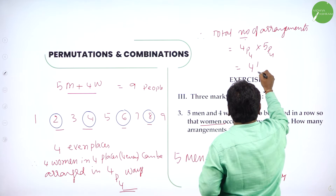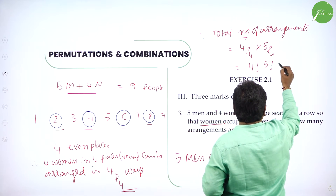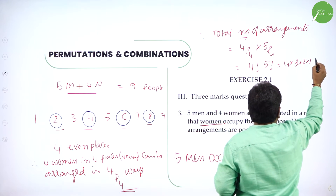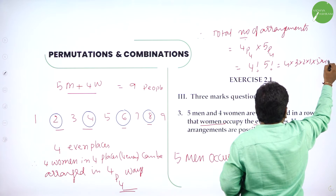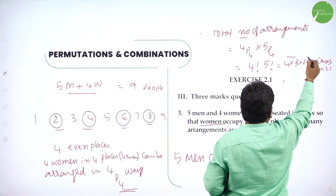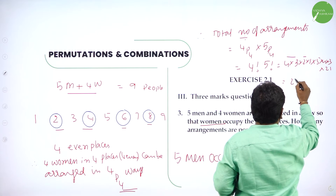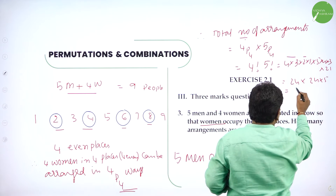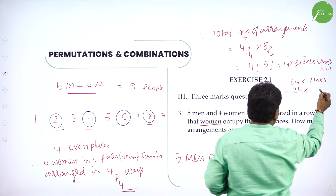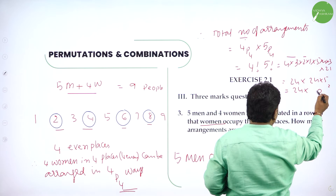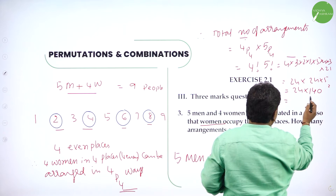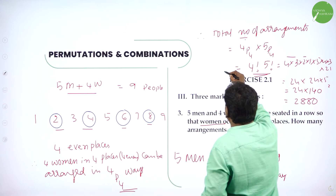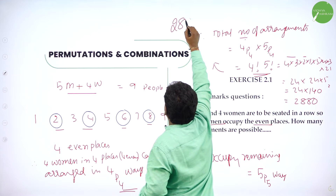You know 4P4 is 4 factorial and 5P5 is 5 factorial. Expand: 4×3×2×1 into 5×4×3×2×1. Multiply: 4 factorial is 24, 5 factorial is 120. 24 into 120 gives 2880. So 4 factorial into 5 factorial — total number of ways is 2880.